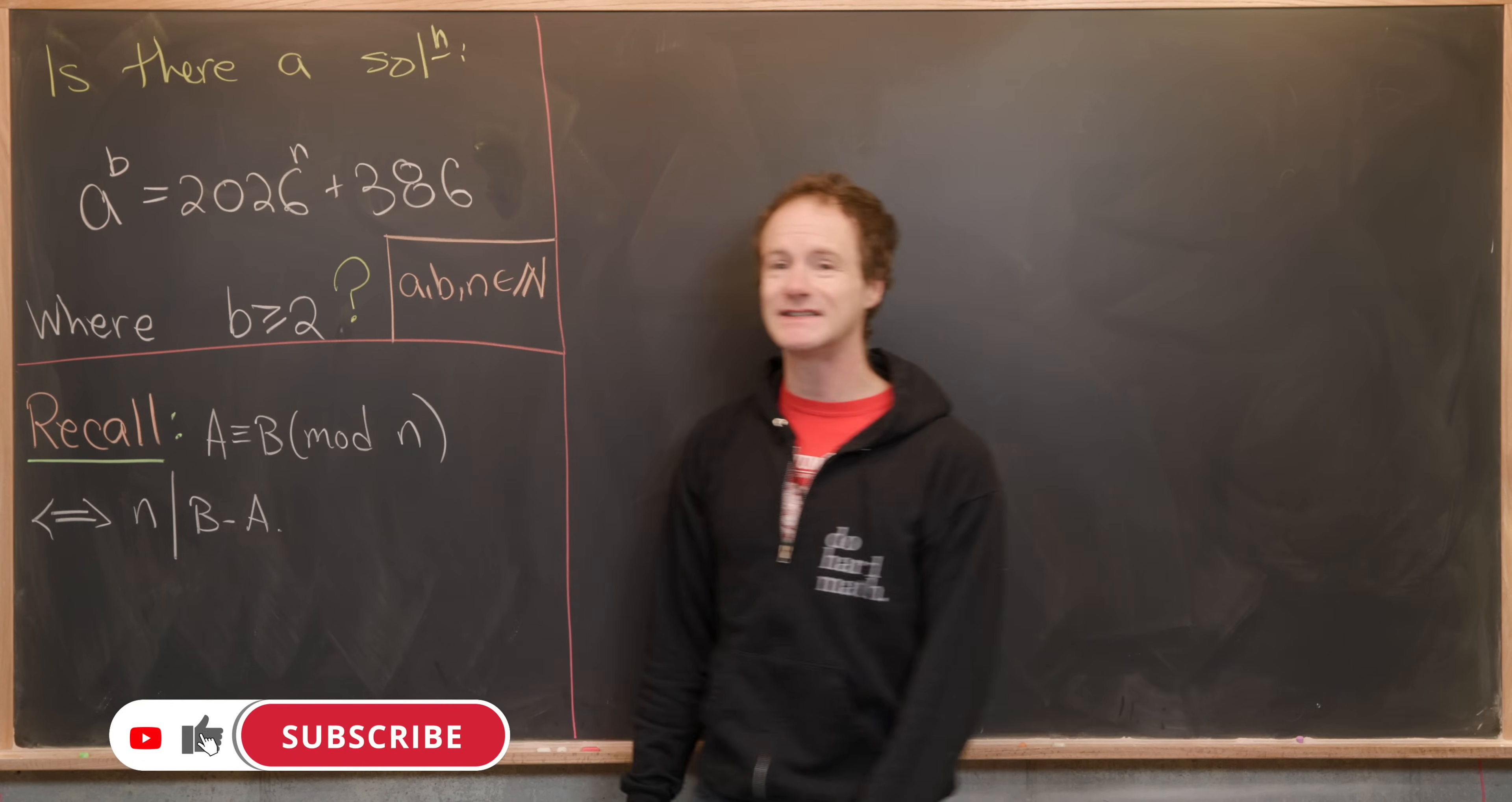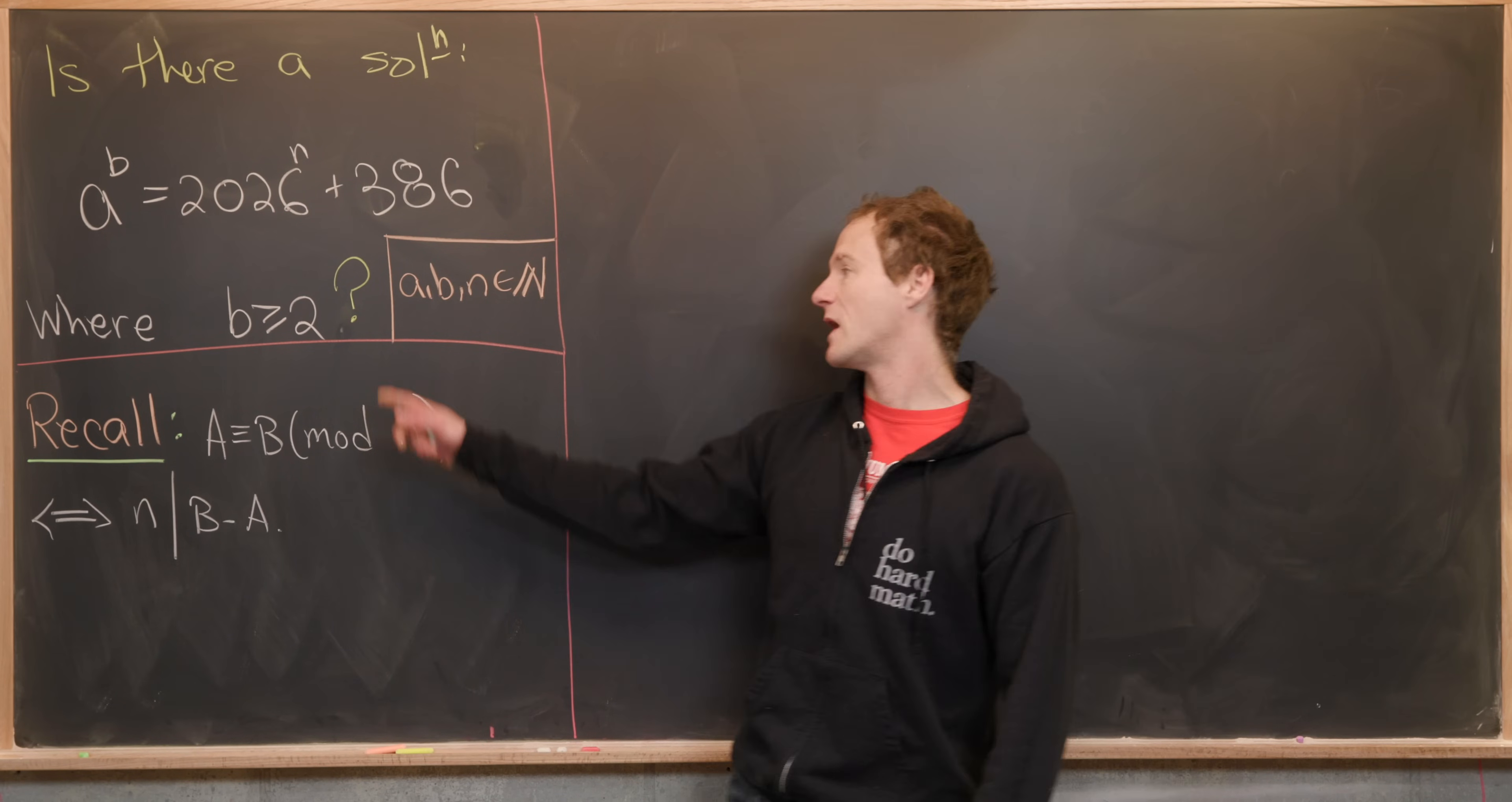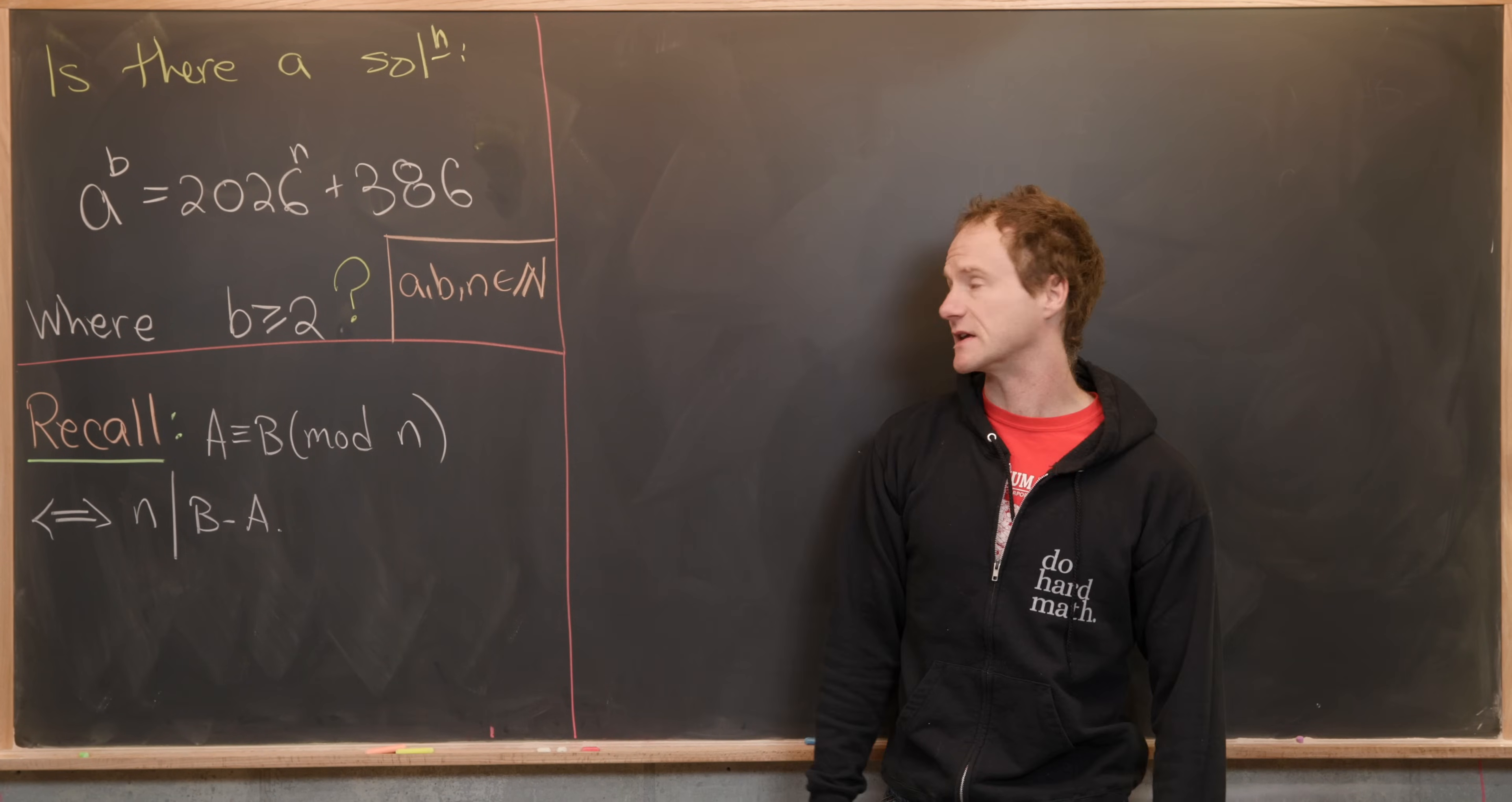So we've got a^b = 2026^n + 386 where we have this condition that b ≥ 2. You might say well why do we have to have that condition that b ≥ 2? Well if b = 1 there is very clearly an infinite family of solutions. You could just take a to be whatever it is on the right hand side.